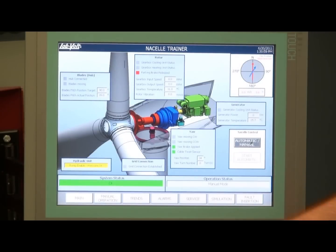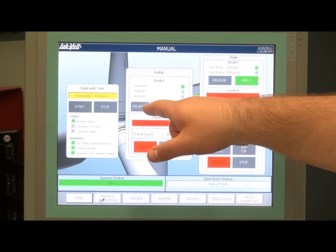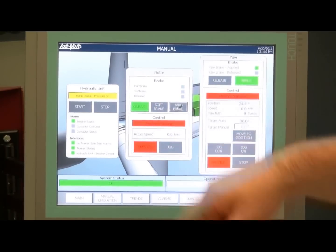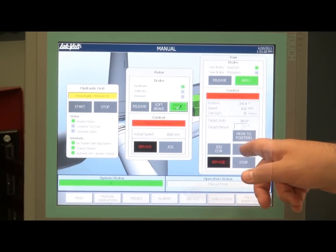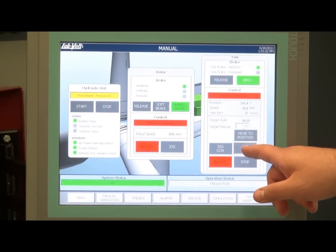The nacelle trainer can also be put in manual mode. In manual mode, you can control the hydraulic unit, start it, stop it, set some valves on and off, and release the brakes. The user can also jog the rotor at a predefined speed and move the yaw as desired.